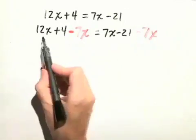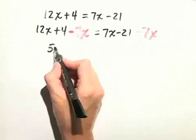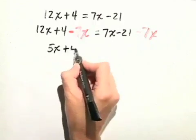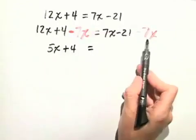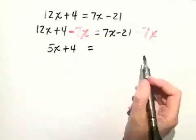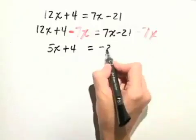On the left-hand side, 12x minus 7x is just 5x plus 4 equals, on the right-hand side, the 7x minus 7x add to 0, so we have negative 21.